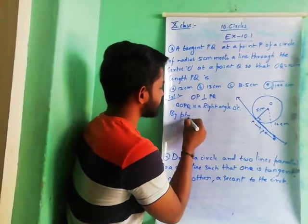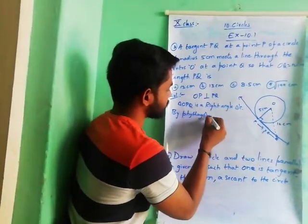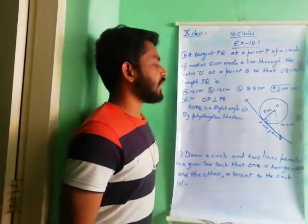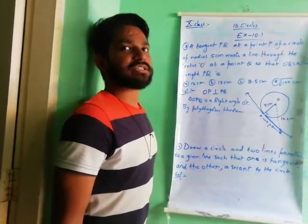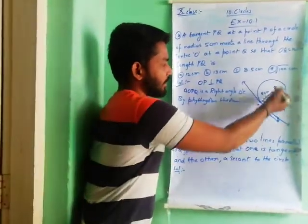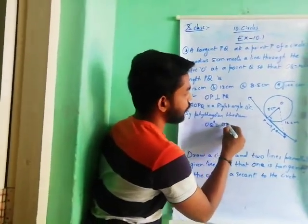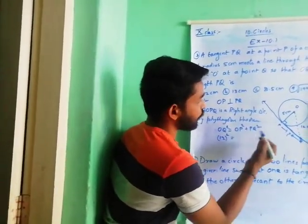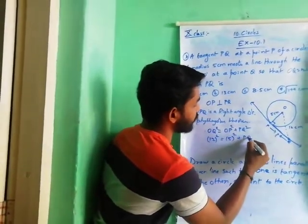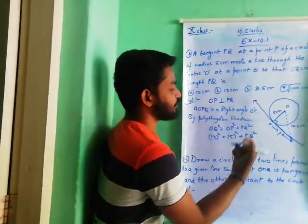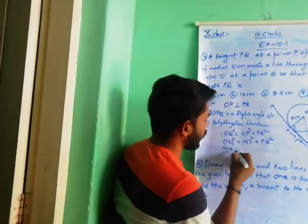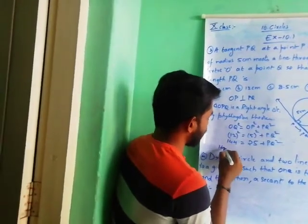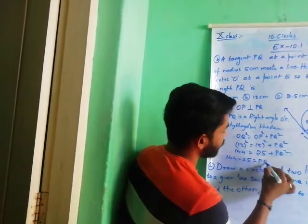By the Pythagoras Theorem: the square of the hypotenuse equals the sum of squares of the other two sides. So OQ² = OP² + PQ². That gives us 12² = 5² + PQ², which is 144 = 25 + PQ². Therefore PQ² = 144 − 25 = 119.